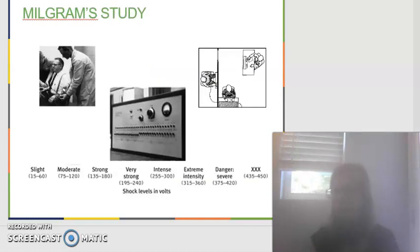This was around the time where we had the Holocaust, and so Milgram was trying to figure out why do we do this. So he had a confederate, someone who did not get shocked, but as a participant you thought they'd get shocked, and so those are the levels of shock.